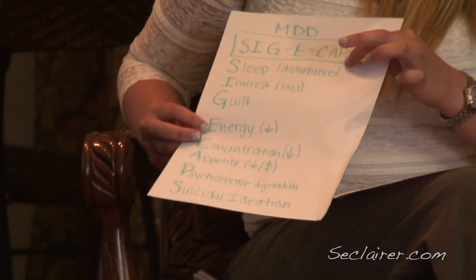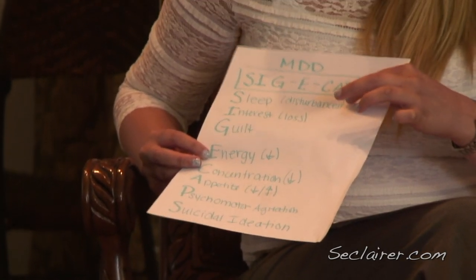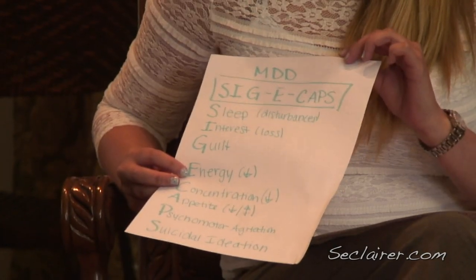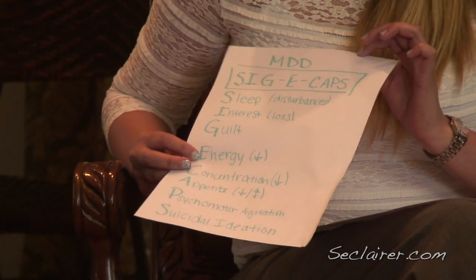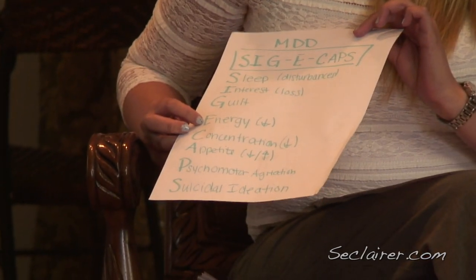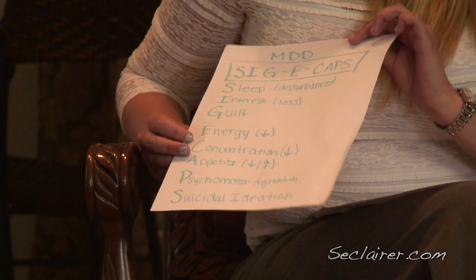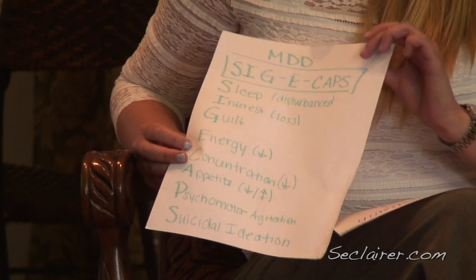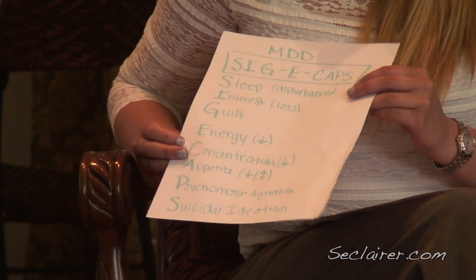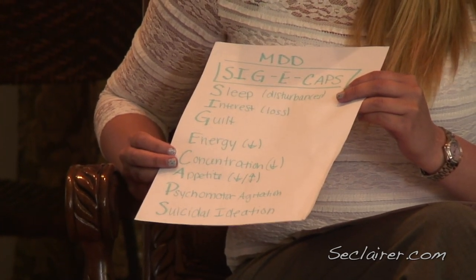The SIG-E-CAPS criteria includes sleep disturbances — insomnia or hypersomnia; interest, which is usually a loss of interest; guilt; decreased energy; decreased concentration; appetite changes — either increased or decreased, representing greater than 5% weight change within a month.